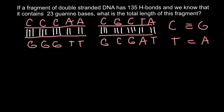Now let's return to our original problem with 135 hydrogen bonds and 23 guanine bases. When we know we have 23 guanine bases, we instantly know they base pair with 23 cytosines, giving us 23 triple bonds between guanine and cytosine. So we multiply 23 by 3, and the 23 guanine-cytosine base pairs give us 69 hydrogen bonds.